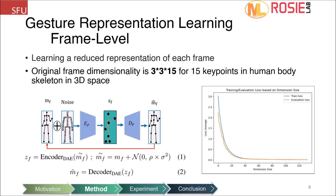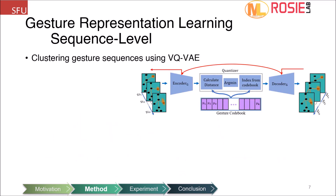We used a denoising autoencoder to learn a lower-dimensional representation of data. We picked 40 dimensions for the bottleneck, since a larger size did not improve training and evaluation loss. After learning a dense representation at the frame level, we train a vector quantized variational autoencoder at the sequence level to cluster gesture sequences.